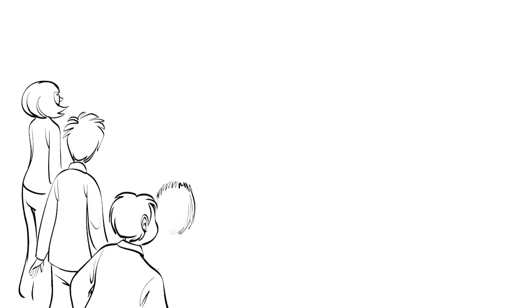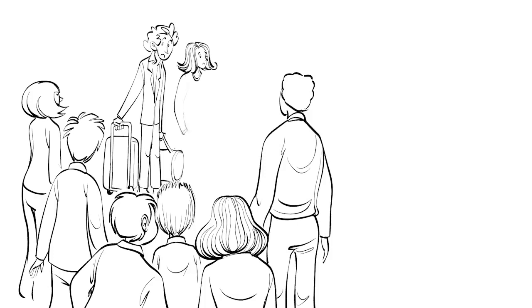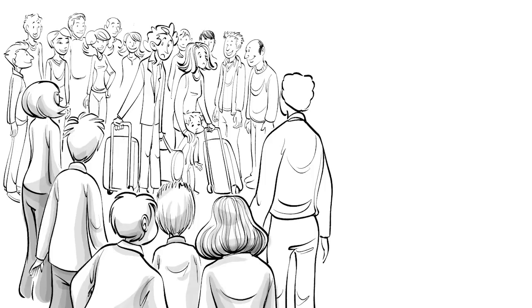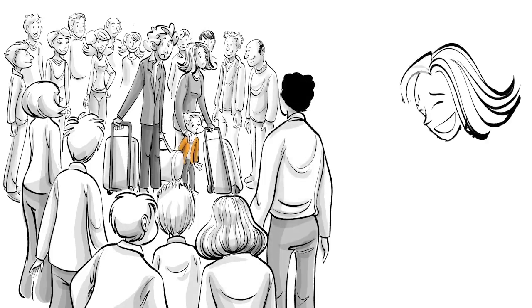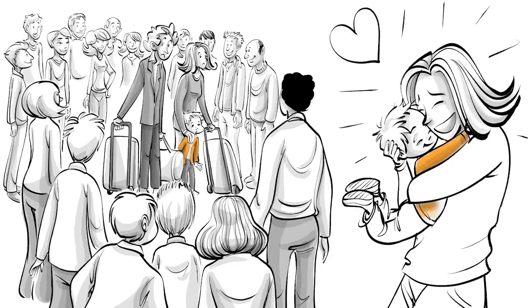Bronfenbrenner made a critical contribution to our realization that parent-child relationships do not exist in a social vacuum, but are embedded in the larger structures such as community, society, and culture. In order to develop well, he allegedly said, every child needs at least one adult who is irrationally crazy about him or her.